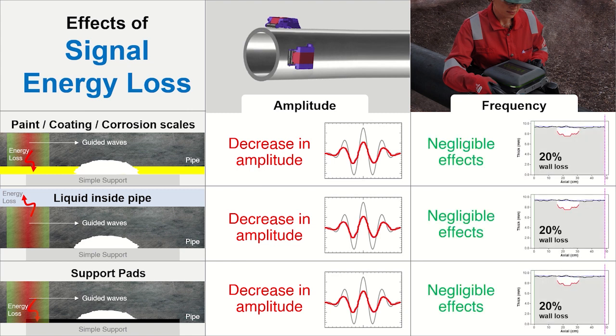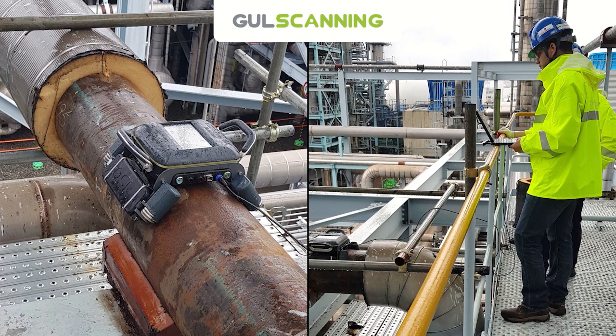GUL scanning's frequency-based method overcomes this limitation because coatings, liquid loads, and support pads have negligible effects on frequency-based results. By reducing the uncertainties of typical but conventionally challenging features such as shallow corrosion profiles or energy loss to paint, GUL scanning gives inspectors confidence in their inspection and delivers accurate data to asset owners.